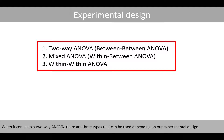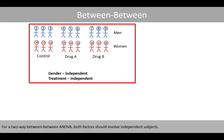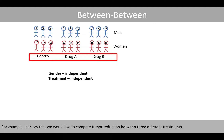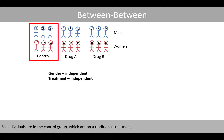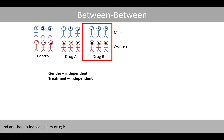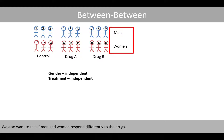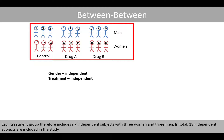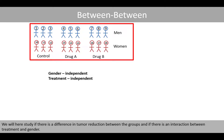When it comes to a two-way ANOVA, there are three types that can be used depending on your experimental design. For a two-way between-between ANOVA, both factors should involve independent subjects. For example, we compare tumor reduction between three different treatments: six individuals in the control group, six trying drug A, and six trying drug B. We also test if men and women respond differently, so each group includes three women and three men — 18 independent subjects total. We study whether there is a difference in tumor reduction between groups and if there is an interaction between treatment and gender.